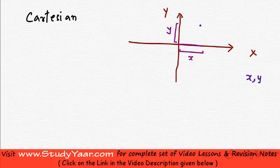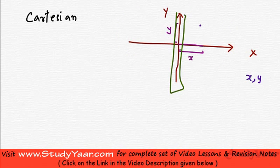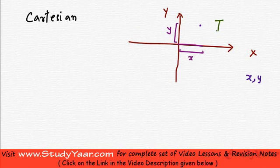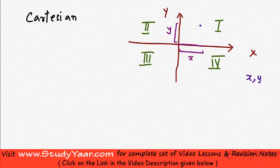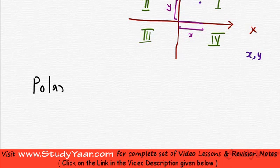In our Cartesian system our two main axes divide the whole plane into four parts, which are known as the first quadrant, second quadrant, third quadrant, and fourth quadrant. Now let's look at the other two-dimensional system that we use, which is the polar coordinate system.